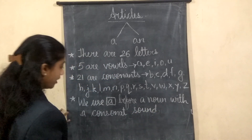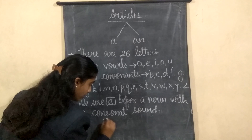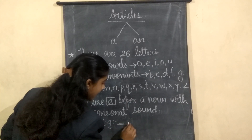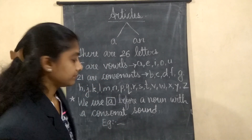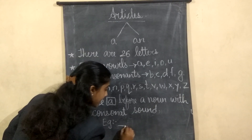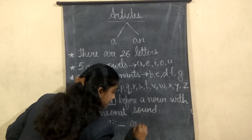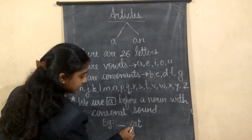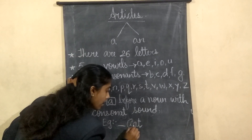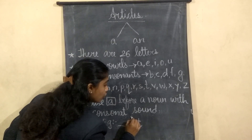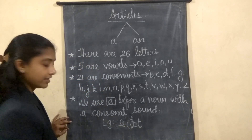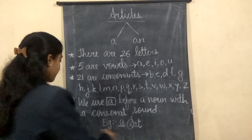For example now: if I give you a blank — cat. Now see here, 'cat' starts with C. C is a consonant. So we write here: 'a cat'. Is it clear children?